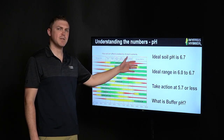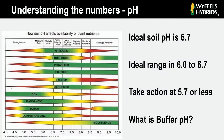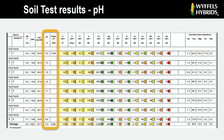Ideal soil pH is 6.7, and the ideal range is 6 to 6.7. We usually want to start taking action when soil pH falls below 6 — somewhere around 5.7 or less for a field average. As you can see, as we move to the left of this table, things become more acidic, and as we get into the more yellow and red, that indicates lesser availability of those nutrients at lower soil pH. A question I get quite often: what is buffer pH and what does it mean? Buffer pH is just a measure of how easily you can actually change the soil pH on your particular field.